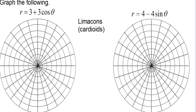Graph the following: r equals 3 plus 3 cosine theta. These are limaçons, and they are a special type of limaçon — they are cardioids. The reason they are cardioids is that when cosine is negative 1, we'll have negative 1 times 3, which is negative 3, and r will be 0. We'll get back to the pole. If a limaçon touches the pole, it is a cardioid.